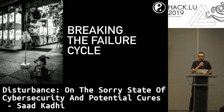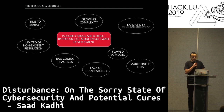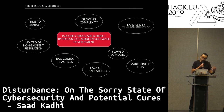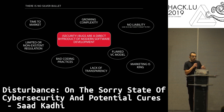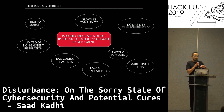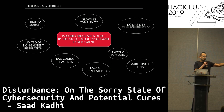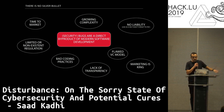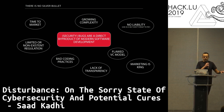So how are we going to break the failure cycle? Of course there is no cyber bugs silver bullet. Security bugs in particular are a direct byproduct of our modern software development practices — due to time to market, no liability at all. You pay a gazillion dollars but it's 'use as is.' Growing complexity, limited or nonexistent regulation for vendors, and bad coding practices.